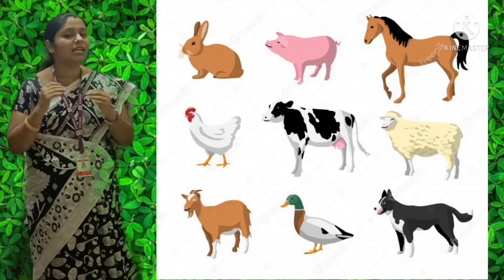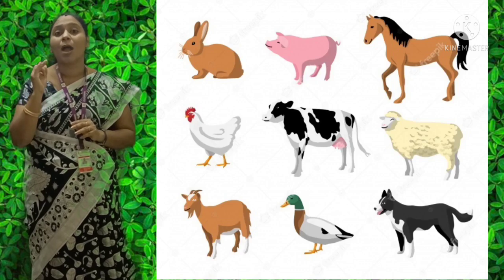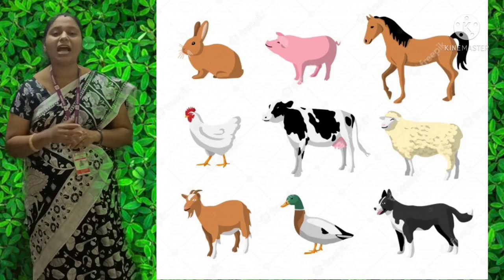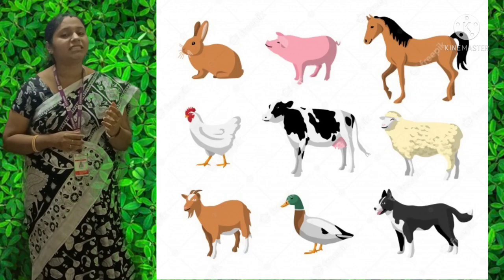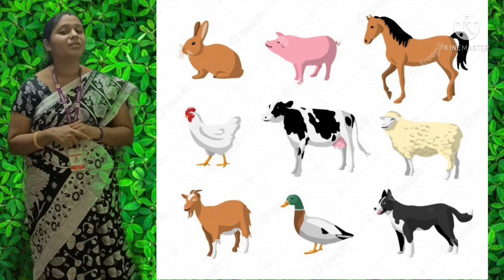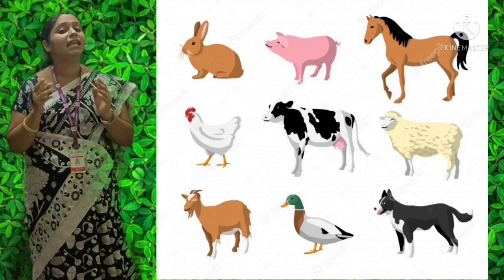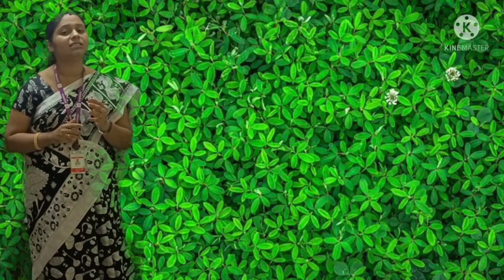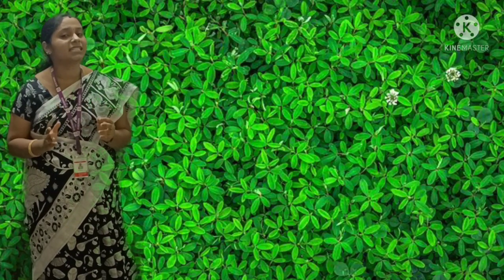Dog guards our house. We get milk from Cow, Buffalo, and Goat. We get eggs from Hen and Geese. We get wool from the skin of Sheep. And the skin of camel is used in making leather products. Now let us move on to the book exercises in our textbook.